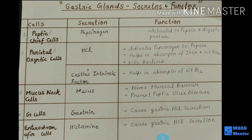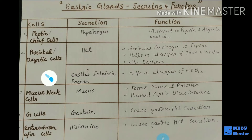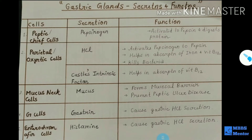Gastric glands are mainly located in the stomach — the word 'gastric' deals with the glands and everything of the stomach. There are mainly three types of cells or glands: number one is the peptic or chief cells, number two is the parietal or oxyntic cells, and number three is the mucus or neck cells. In addition, G cells and enterochromaffin cells are also present.